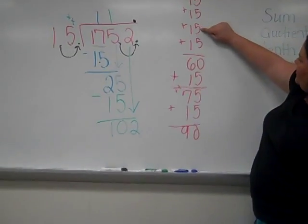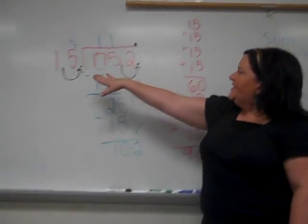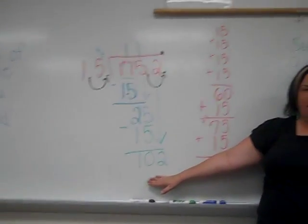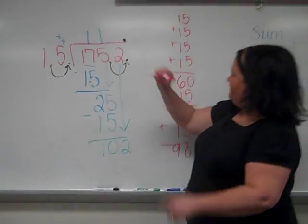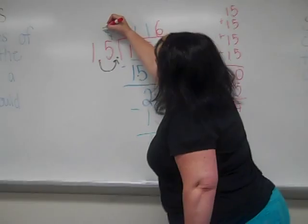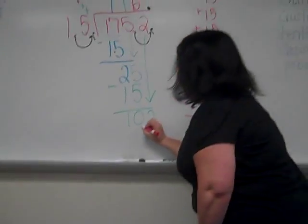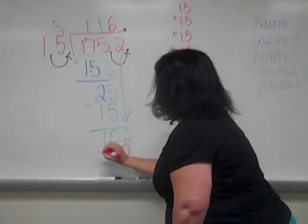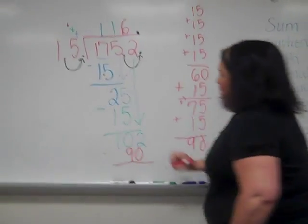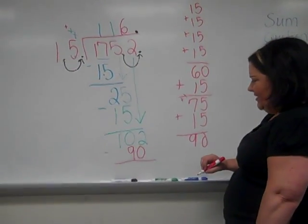So let's count the amount of 15s we've added. 1, 2, 3, 4, 5, 6. So 15 must go into 102 six times. And then 6 times 15, we already have it right here, which is 90. And we're going to subtract 90 from 102, which is 12.